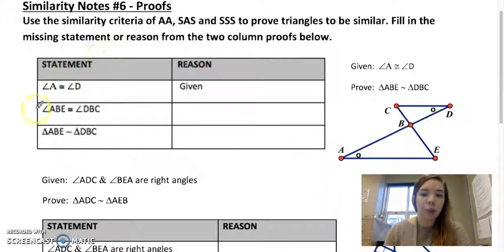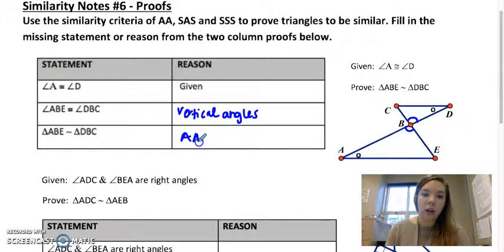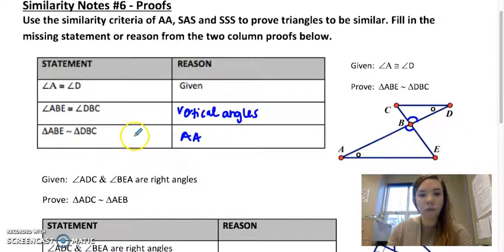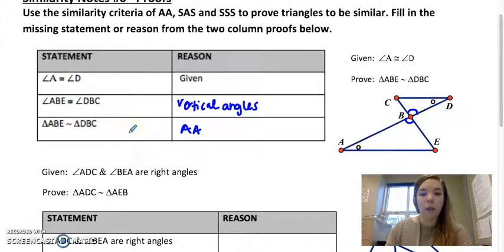Now we do know, they actually filled this part out for us. Angle ABE is congruent to DBC. Because these are vertical angles. Vertical angles are always congruent. So that's our reason. Vertical angles. And then the triangles are similar because we have angle-angle. We could find the last angle of our angle-angle criteria. Okay, so there's that one.